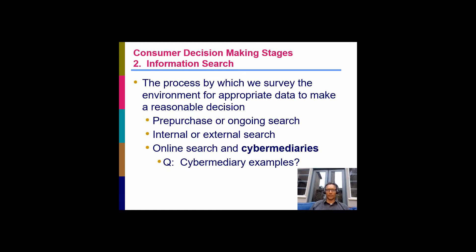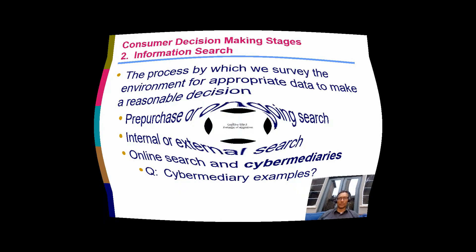In step two, information search, we survey the environment and gather the appropriate data to make a reasonable decision. There are now so many cyber intermediaries — places like Amazon and Google — that give you comparison products, similar items people also purchased, and customer reviews. It's all available to you. We are in the information age, so this step is now very easy.